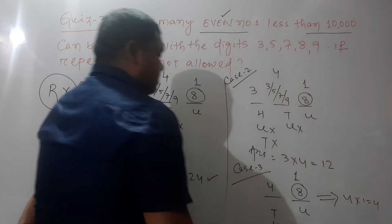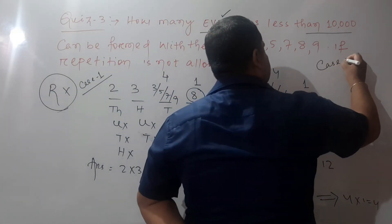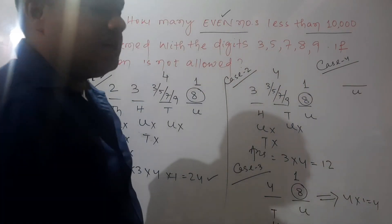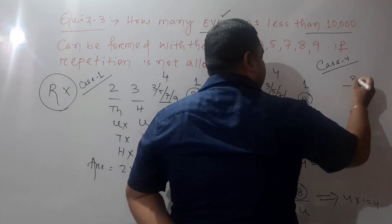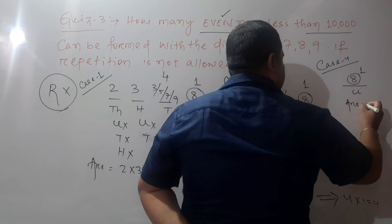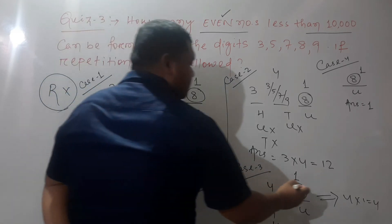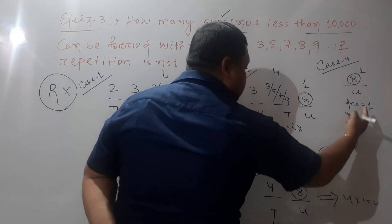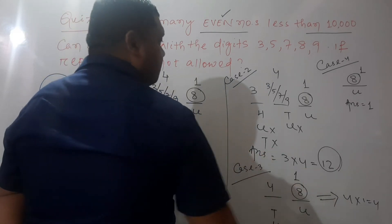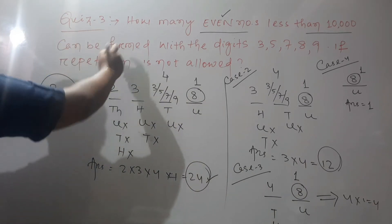Case 4: single-digit even numbers. For the unit place, only 8 is available as an even digit — one possible way. So the answer is 1. The final answer is 24 + 12 + 4 + 1 = 36 + 4 + 1 = 41.